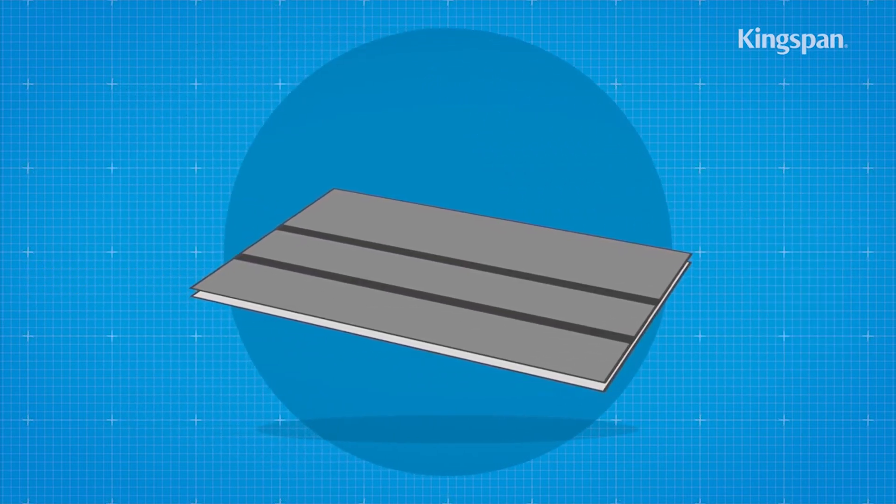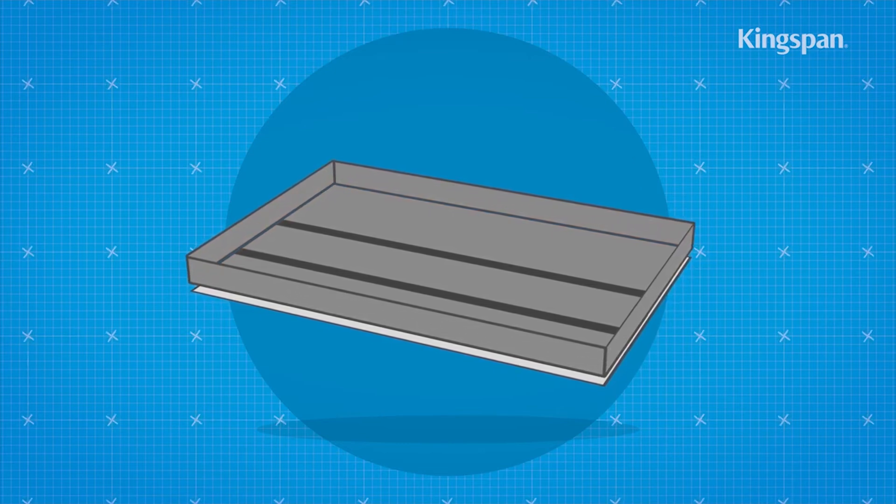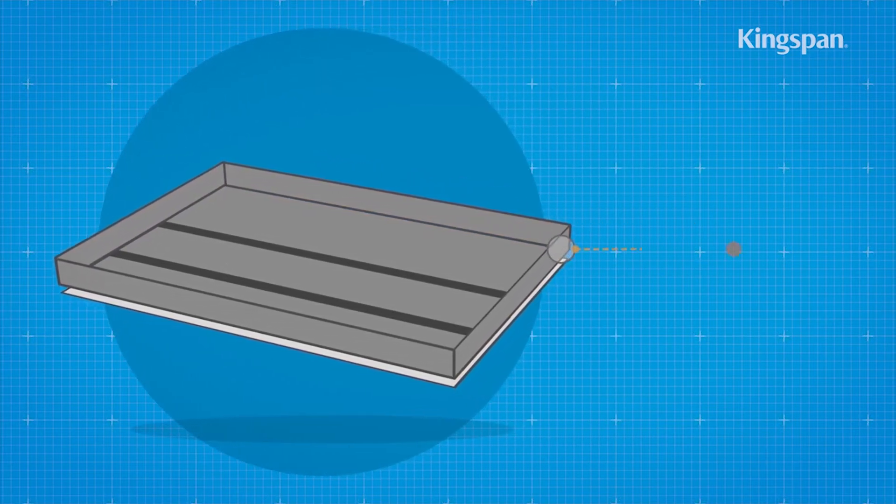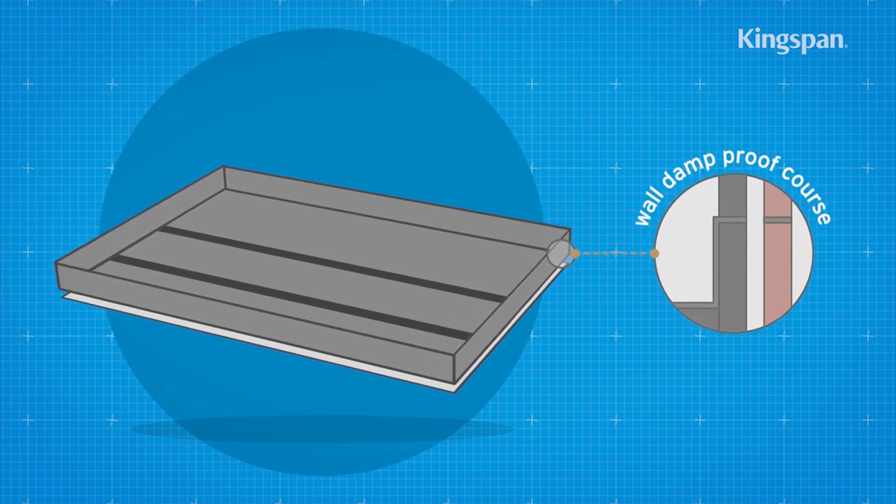The membrane should be brought up to the surrounding foundation walls until it's sufficiently high enough to connect with or form the wall damp-proof course.